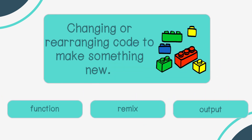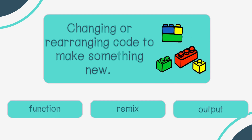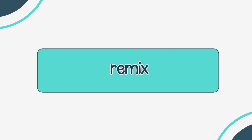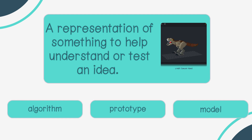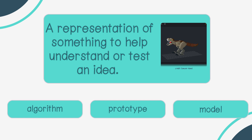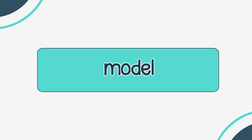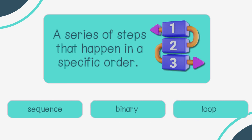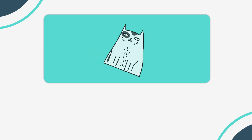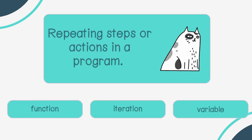Changing or rearranging code to make something new — function, remix, or output? Remix. A representation of something to help understand or test an idea — algorithm, prototype, or model? Model. A series of steps that happen in a specific order — sequence, binary, or loop? Sequence.